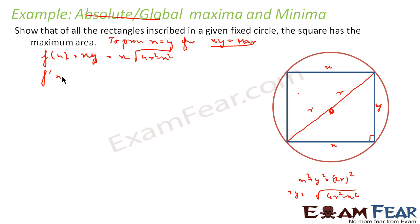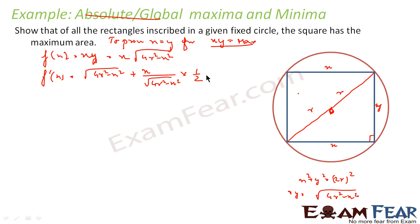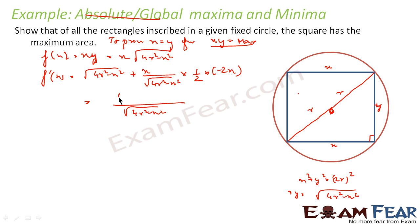First, differentiate this function. Using the product rule and chain rule: f'(x) = √(4r² - x²) + x · (1/2)(4r² - x²)^(-1/2) · (-2x). If you are having issues with this, watch the derivatives chapter where we explain how to derive such equations.